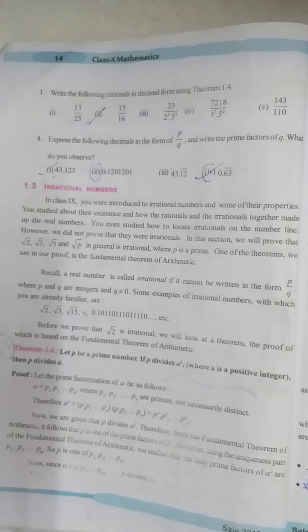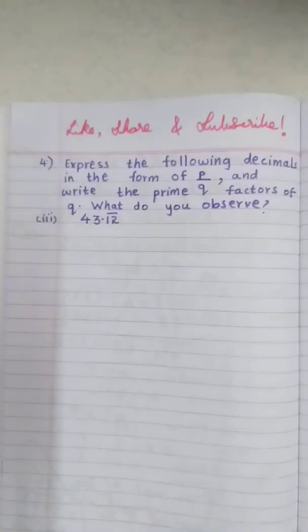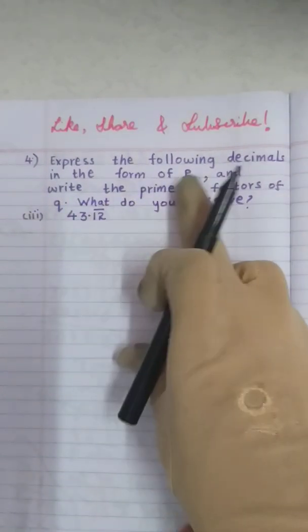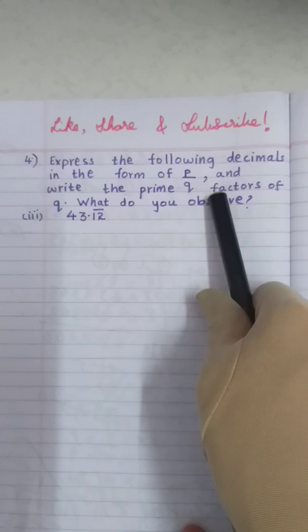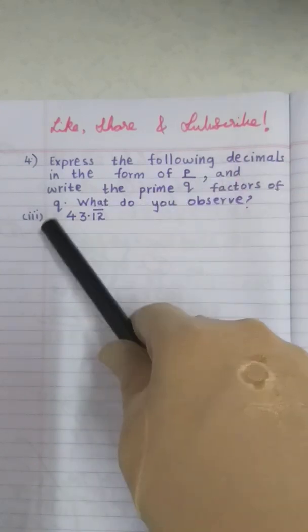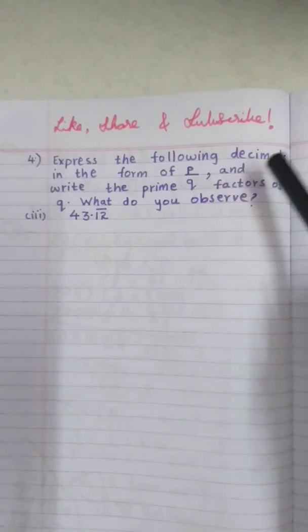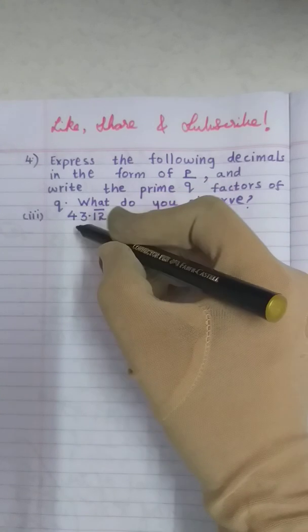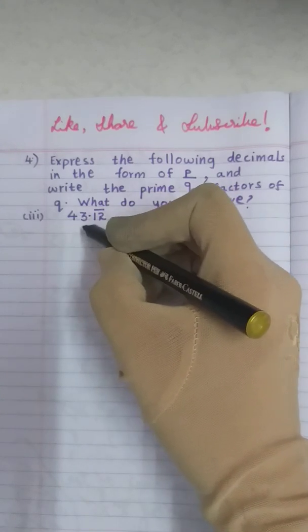Here we have, first let us understand the question carefully. It is telling express the following decimals in the form of P by Q and write the prime factors of Q. What do you observe? So first we have to express this decimal form into fractional form. So what is the bit given to us, 3rd bit,